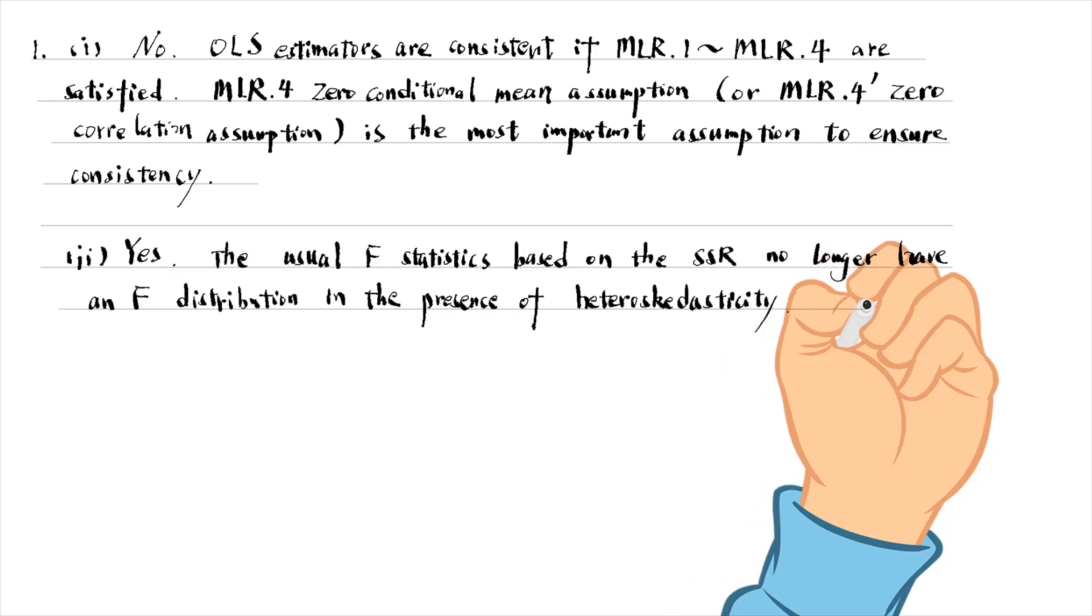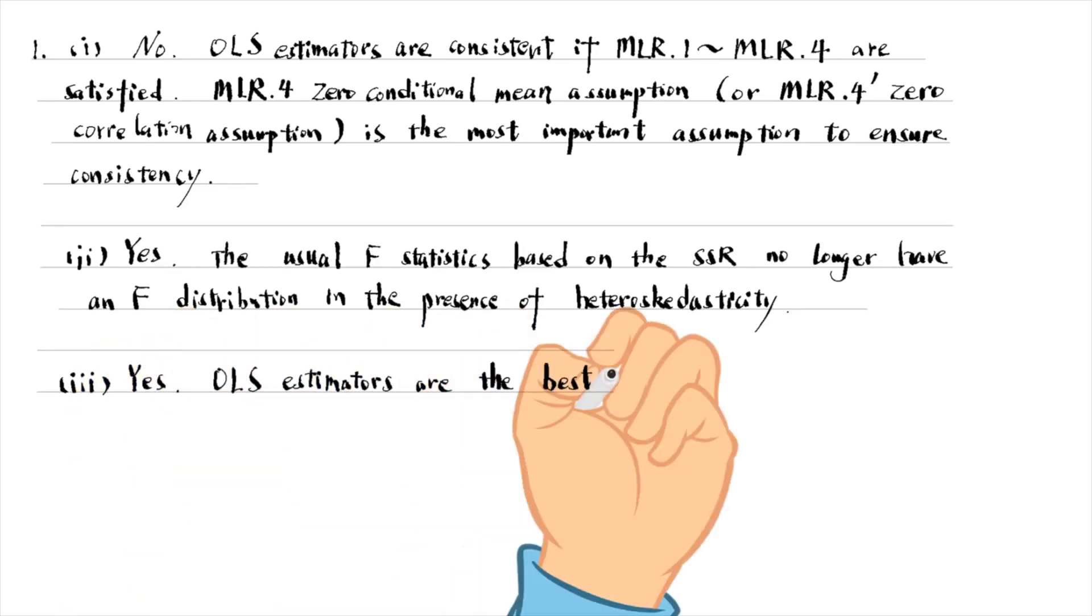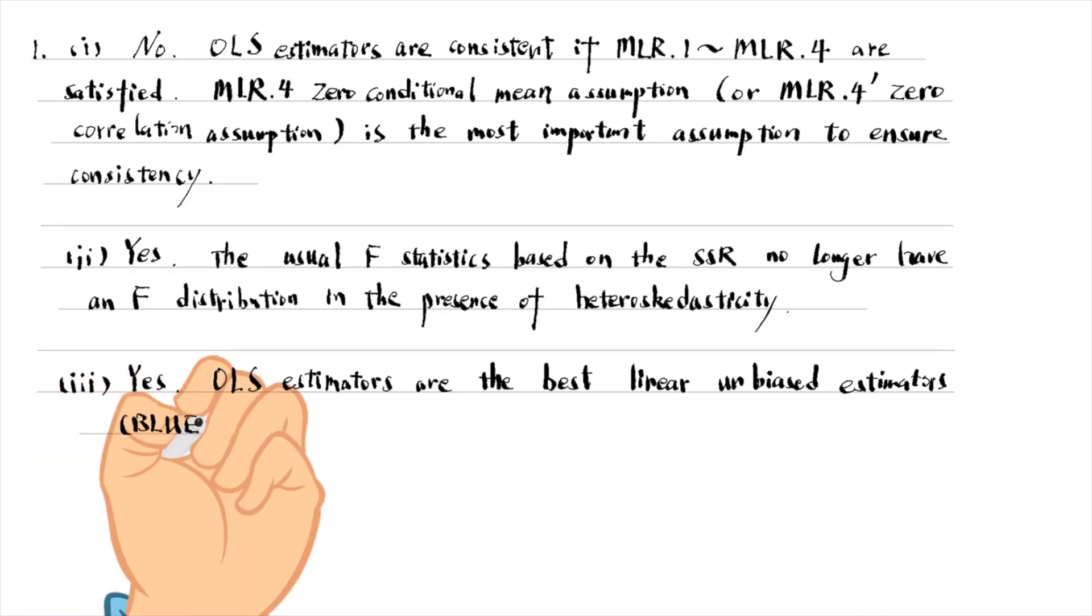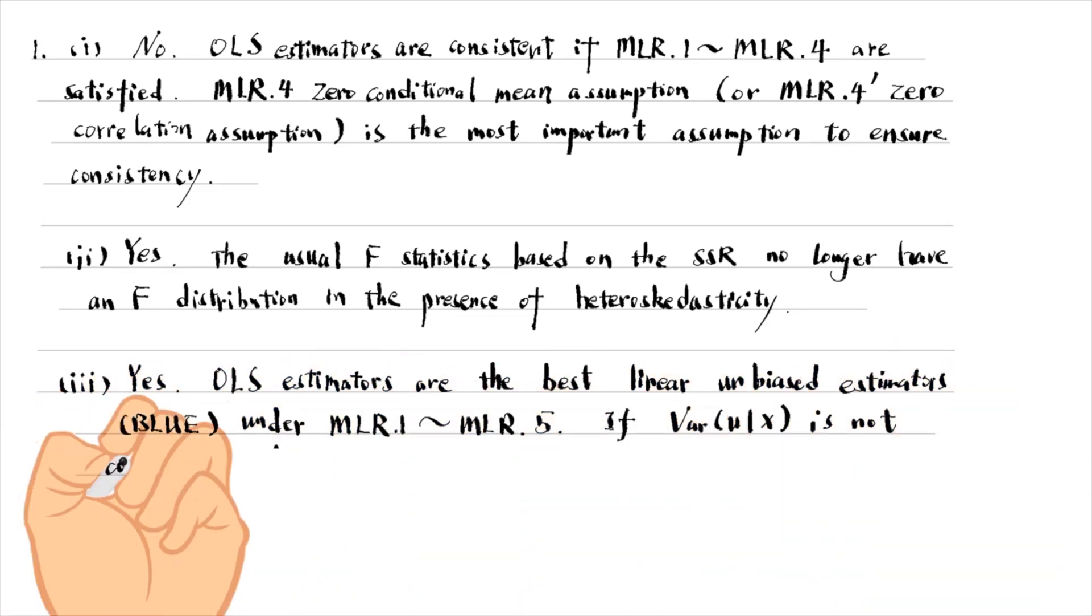Part 3 is also a consequence of heteroscedasticity. OLS estimators are the best linear unbiased estimator, BLUE, under the first five assumptions. If the variance of the error term conditional on X is not constant, other estimators could have a smaller variance than the OLS estimators.